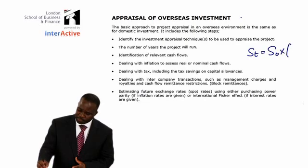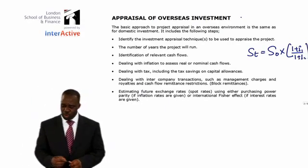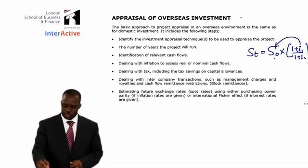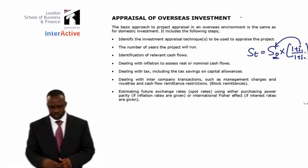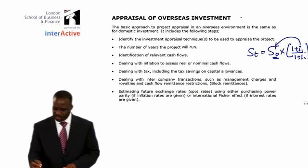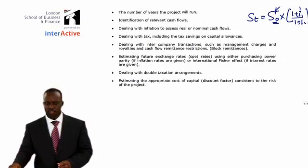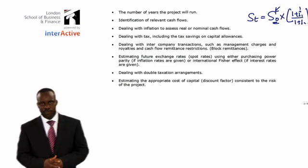According to purchasing power parity, the exchange rate at a point T is calculated as the exchange rate now multiplied by one plus inflation one, divided by one plus inflation two. Inflation one is the inflation of the currency you are putting in the numerator — so if you're putting dollars there, you use US inflation on top and UK inflation on the bottom. Then you convert the dollar net cash flows into pound sterling.